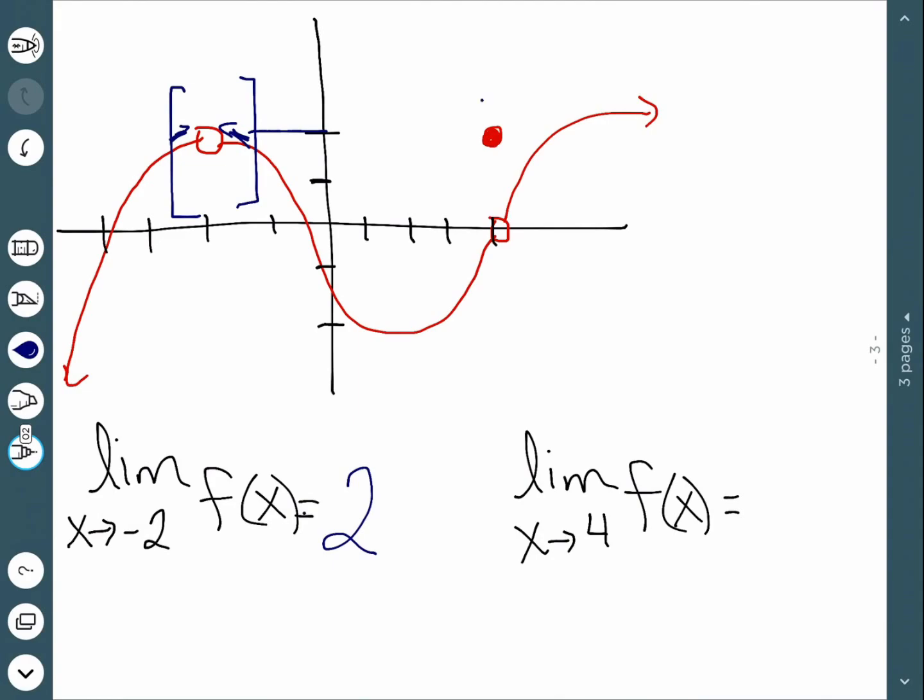What about at 4? Now we want to look right around 4, and see exactly what's going on with the function. And we can see that both sides of this function are getting closer and closer and closer to 0.